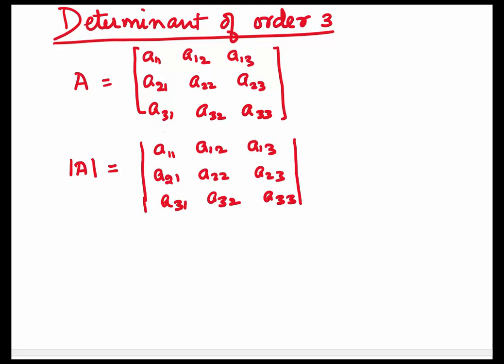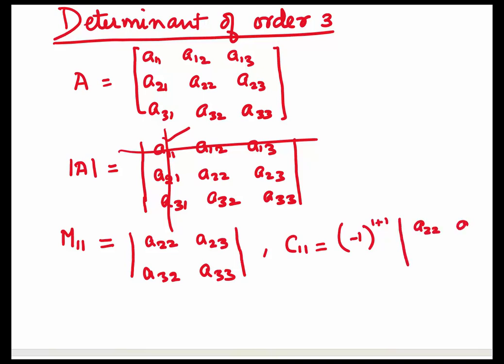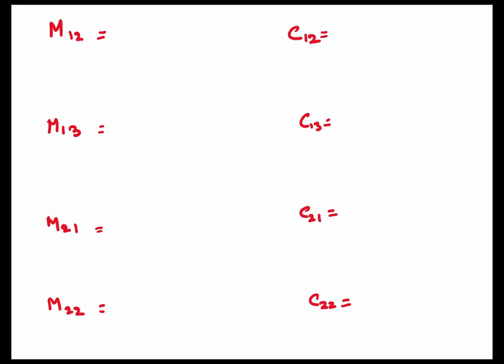Coming to determinants of order 3, we do the same process. We have a matrix A and we form the determinant. To find the minor m11 of a11, we strike off all the values in the first row and first column and form the determinant from the remaining elements: a22, a23, a32, a33. This is the minor of a11. The cofactor c11 is minus 1 to the power 1 plus 1 times m11, which is the determinant of a22, a23, a32, a33.